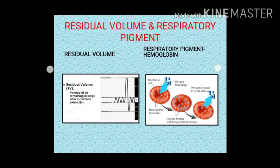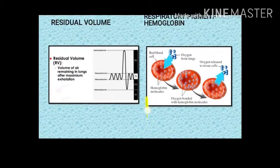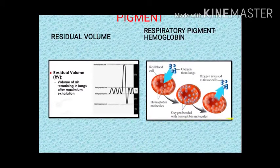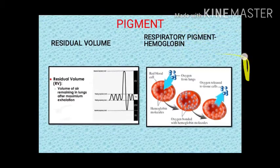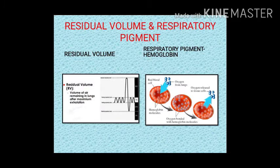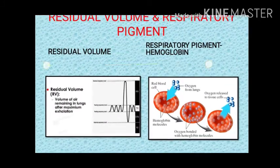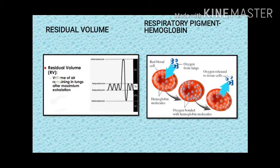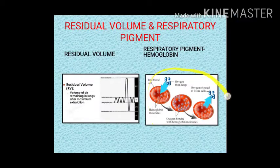Residual volume (RV) is the volume of air remaining in the lungs after maximum exhalation. The respiratory pigment in humans is hemoglobin. Red blood cells contain hemoglobin, which accepts oxygen from the lungs, forms oxyhemoglobin, and transports it to the tissues where oxygen is released.